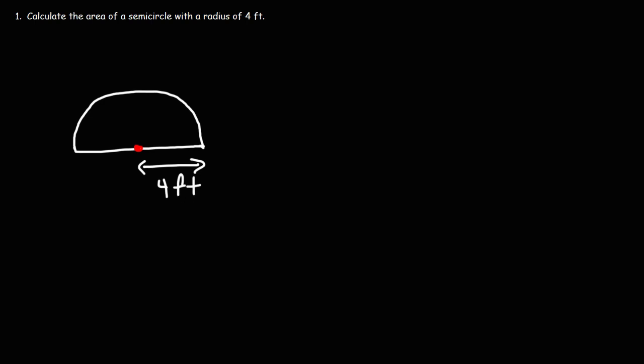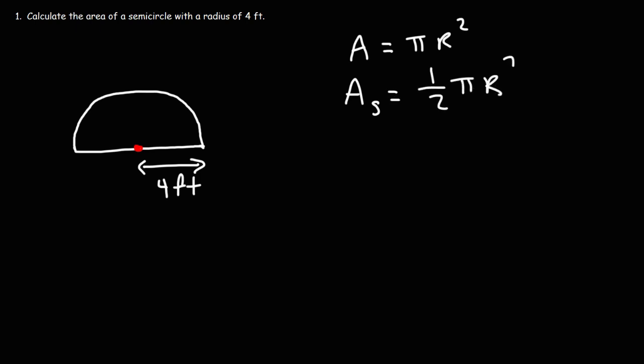Now we need to know the formula to calculate the area of a circle. The area of a circle is π r squared — that's a full circle. Now to calculate the area of a semicircle, we need to take half of this value. So the area of a semicircle is just one half π r squared.